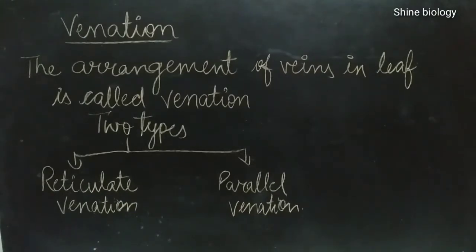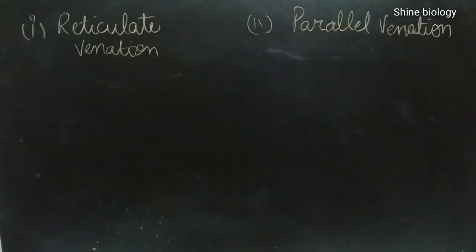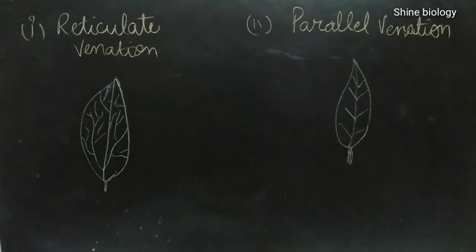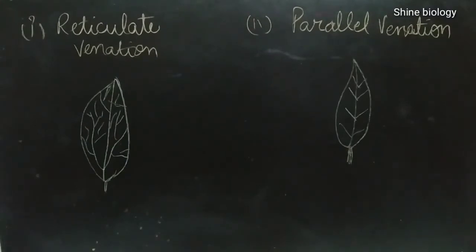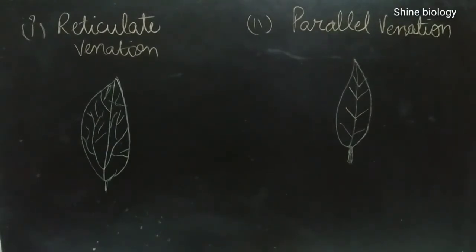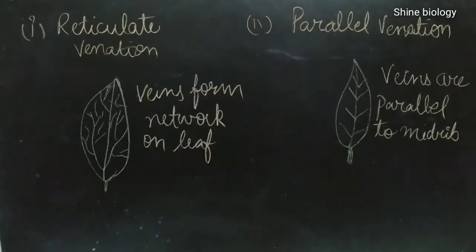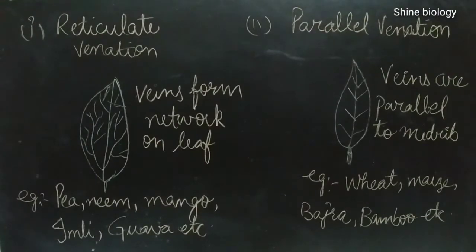The difference between reticulate and parallel venation is shown on the board. In reticulate venation, the veins are scattered in the leaf and make a network on the surface. In parallel venation, the veins are parallel to the midrib. Reticulate venation is commonly seen in pea plant, neem, mango, imli, and guava. Parallel venation is commonly seen in wheat, maize, bamboo, etc.